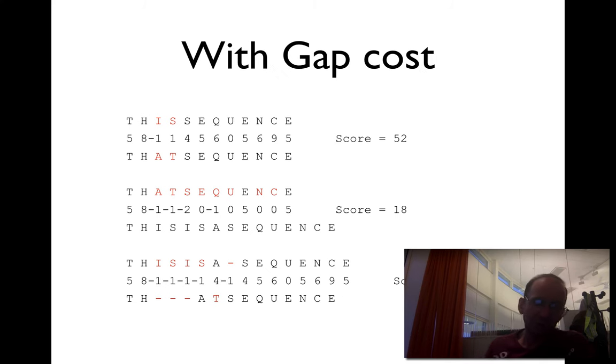And actually, on the other hand, there is the cost of the gaps. We put in minus 1 for each gap. Still, the third alignment is much better than the second alignment: 51 versus 18.